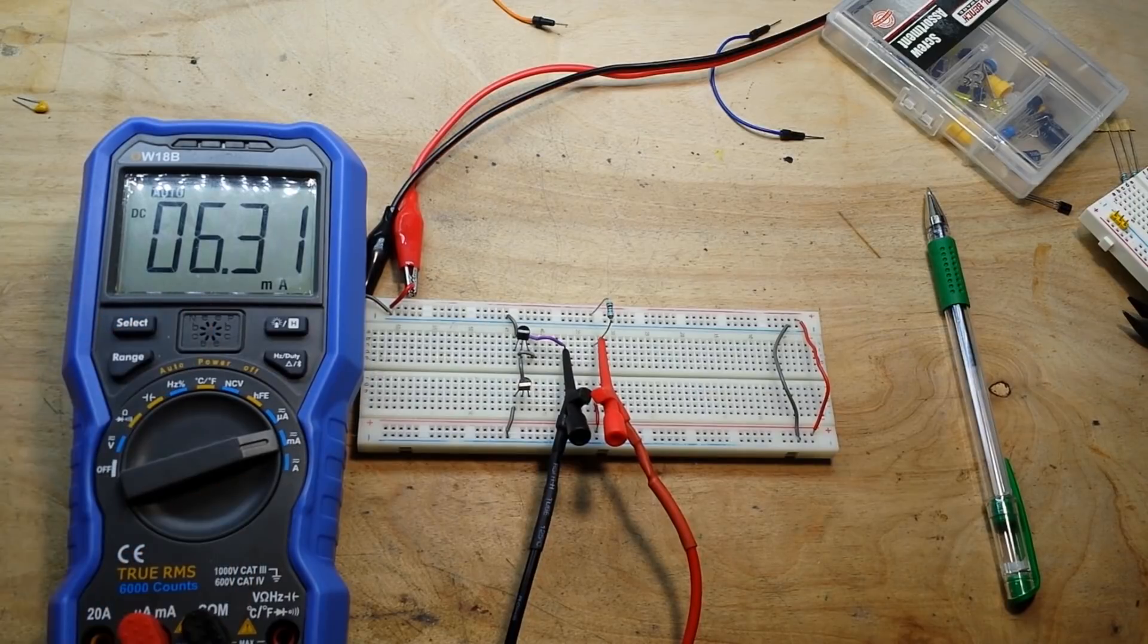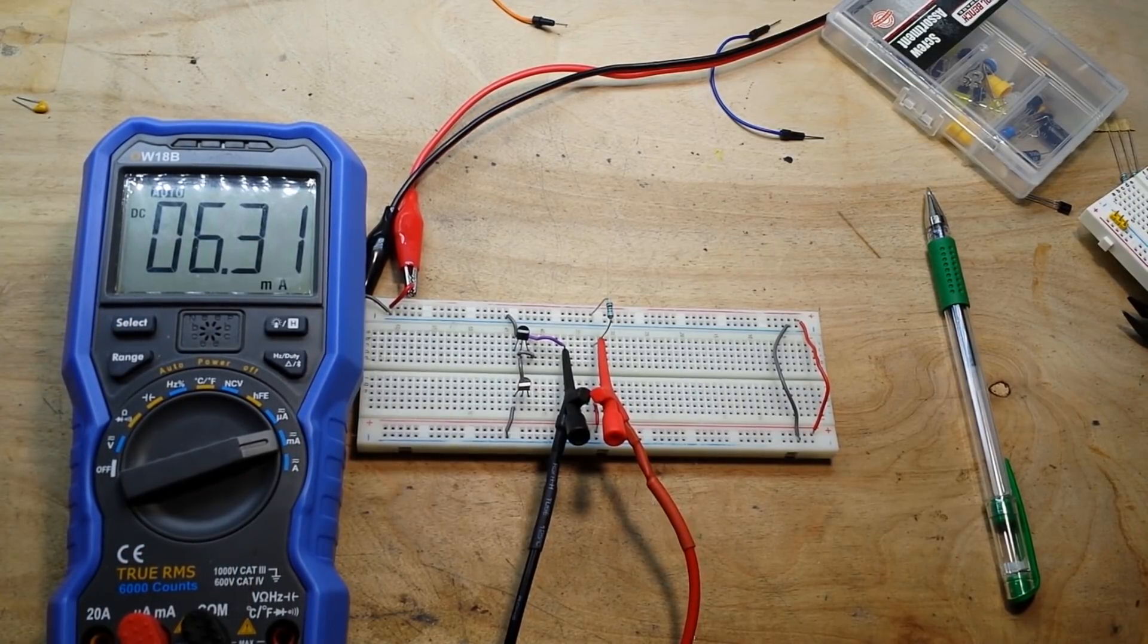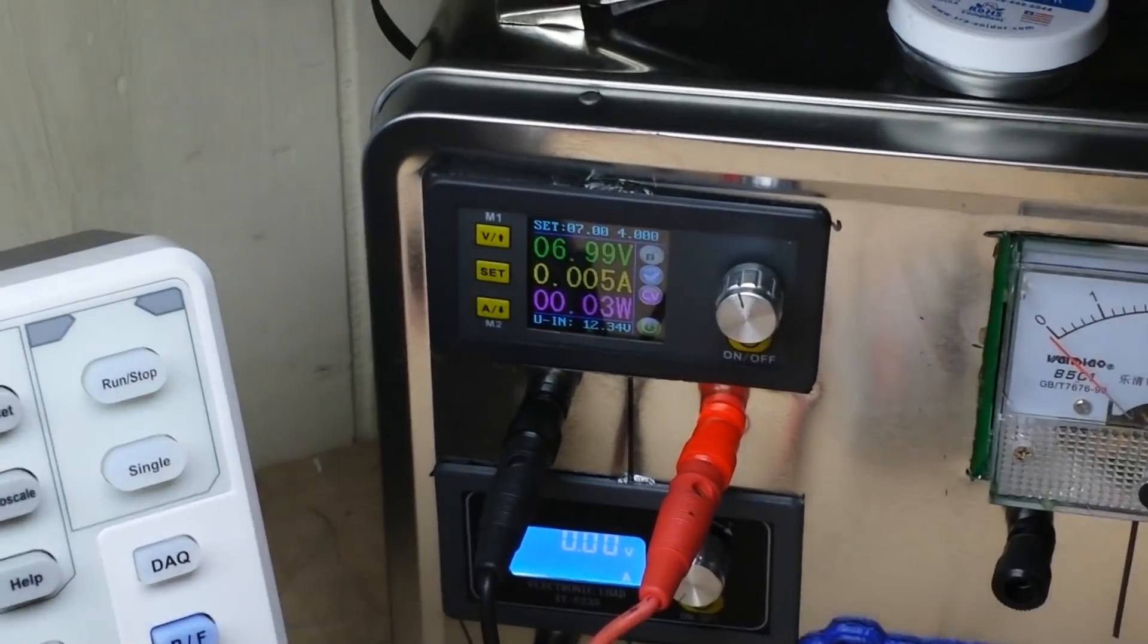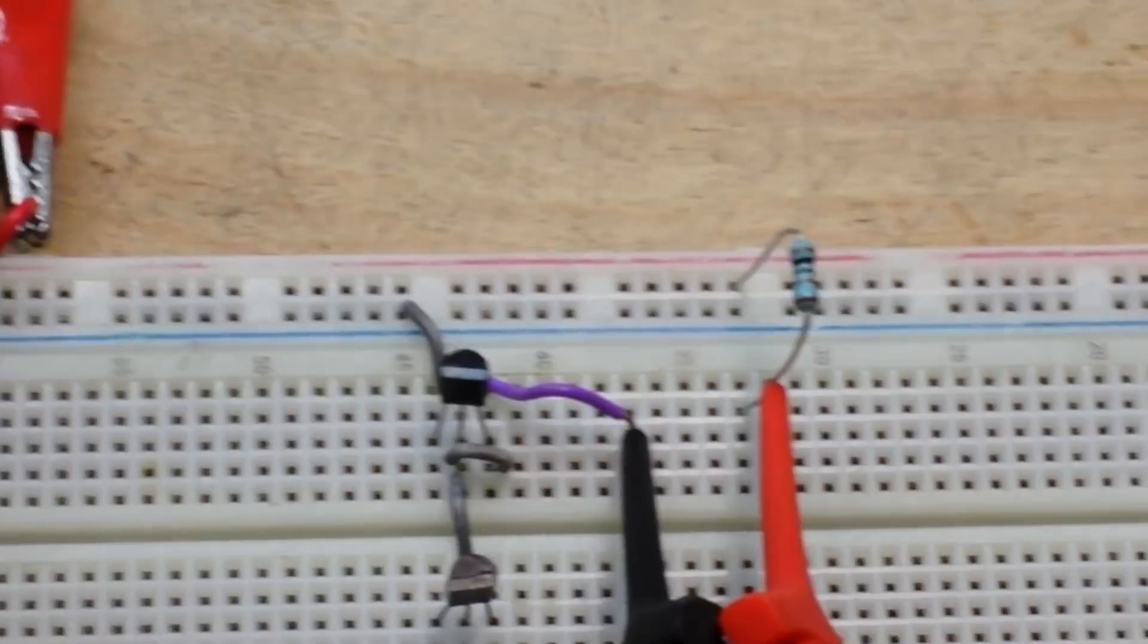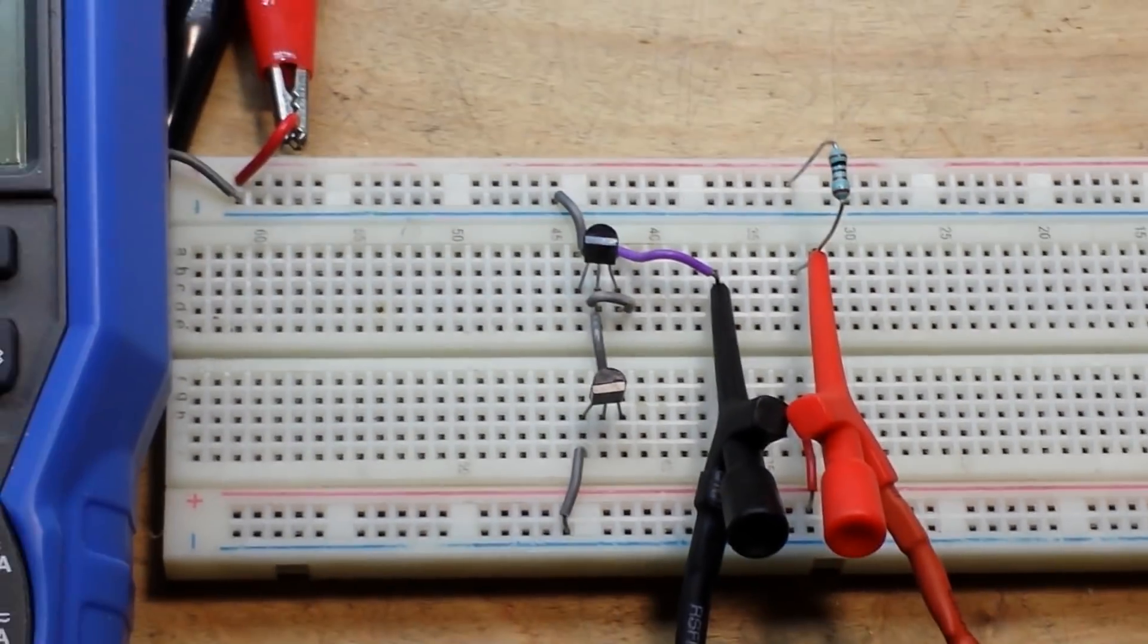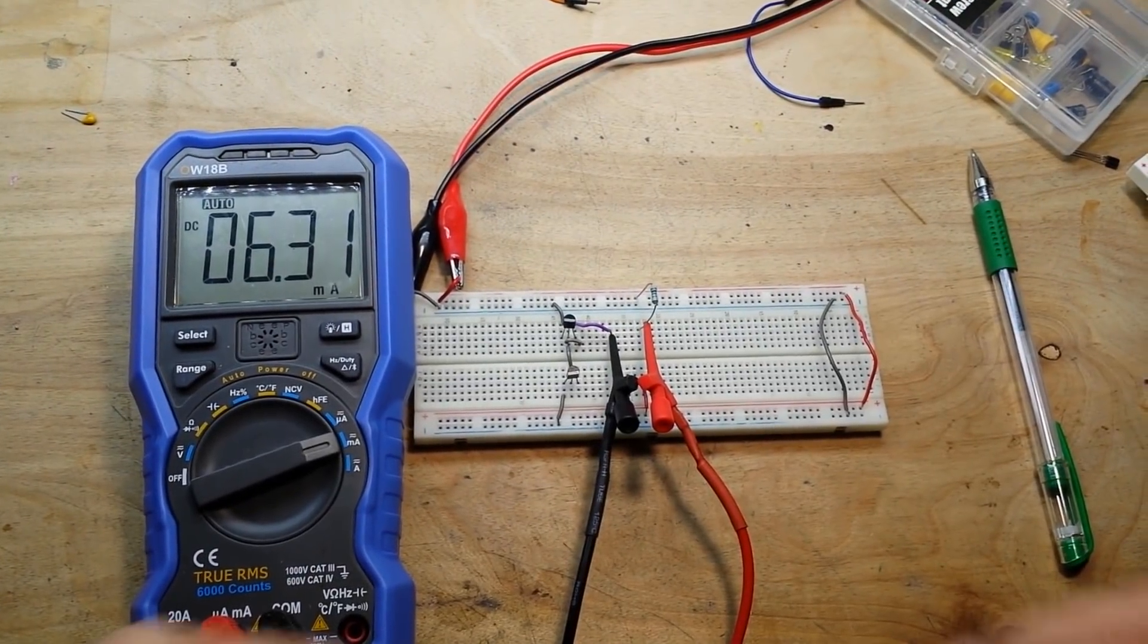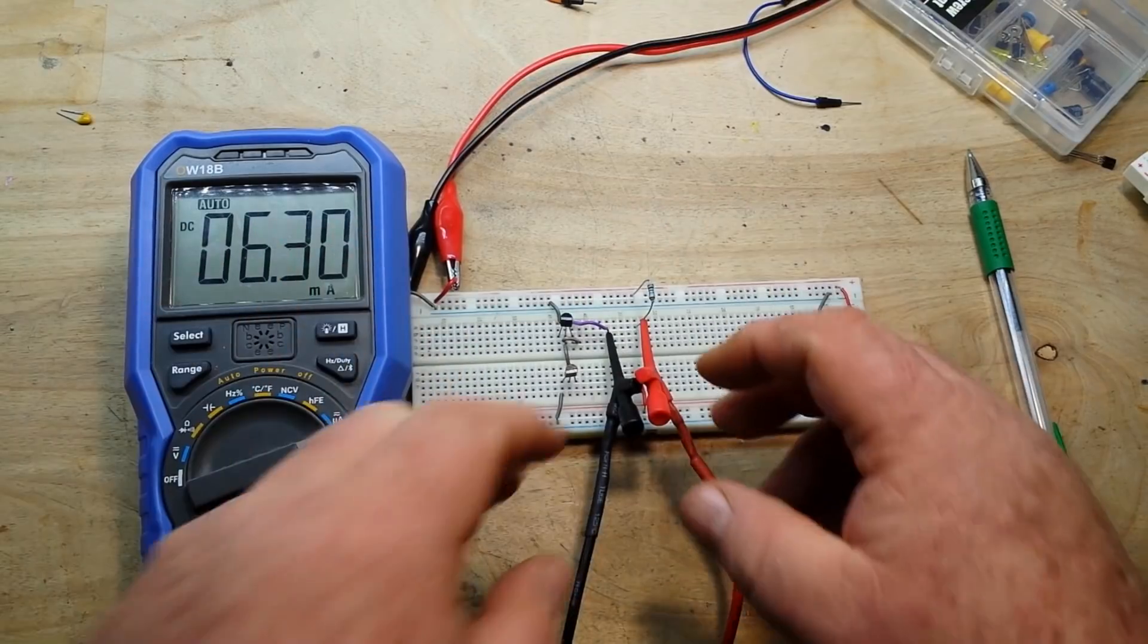And what you are seeing there is about 6.3 milliamps and if we look at the power supply, it is shown 5, close enough. Nothing here is that exact because nothing in the real world is that exact. So just remember that number, let's just call it 6 milliamps.